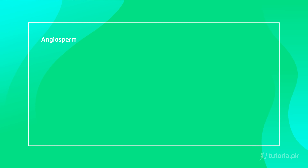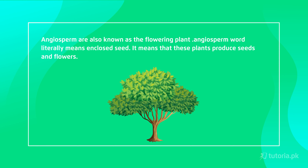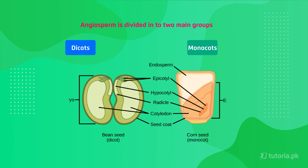Now we talk about the most successful group — Angiosperms. Angiosperms are called flowering plants. The word angiosperm means 'enclosed seeds,' because these plants produce seeds enclosed in a fruit or flower. This is the most advanced and diverse group of plants. Angiosperms are divided into two categories: Monocots and Dicots, whose differences we have studied in detail.